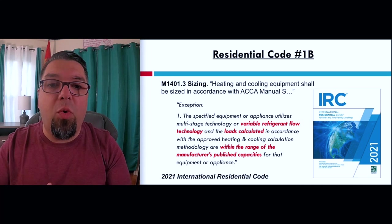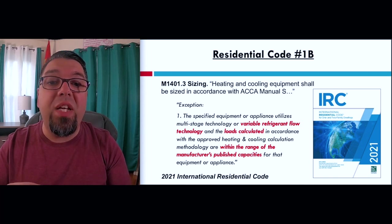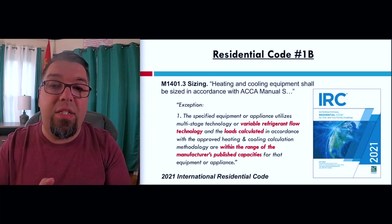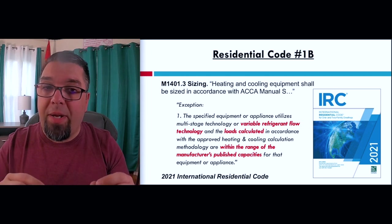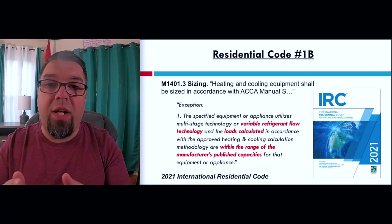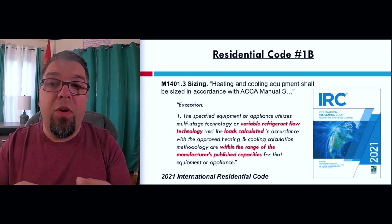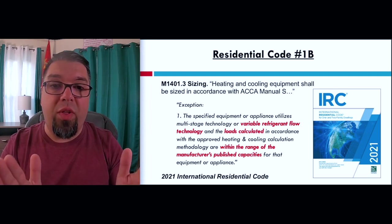The exception says: the specified equipment utilizes multi-stage or variable refrigerant flow technology and the loads calculated in accordance with the approved heating and cooling calculation methodology are within the range of the manufacturer's published capacities for that equipment. It doesn't mean you can just put in whatever you want — it does mean you don't necessarily have to walk through the full Manual S process if the published submittal data shows your load is within the operating range.